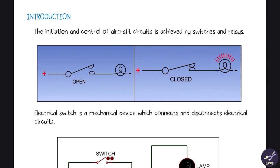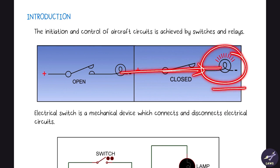The initiation and control of aircraft circuits is achieved by switches and relays. If the switch is open, there will be no current flowing and the light bulb will not light up. If the switch is closed, current will flow and the light bulb will light up.